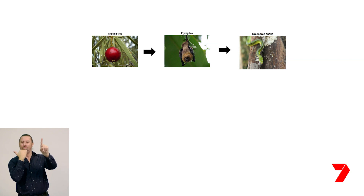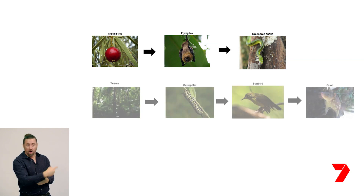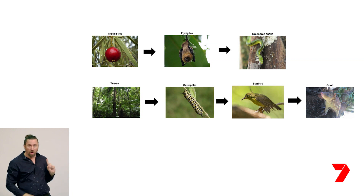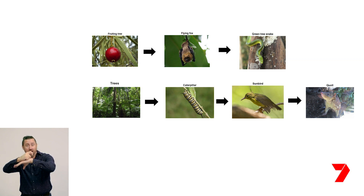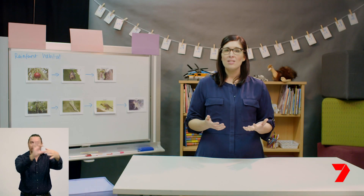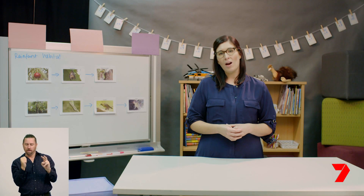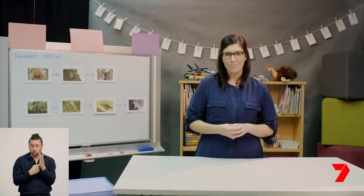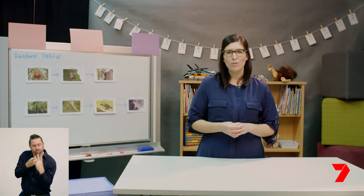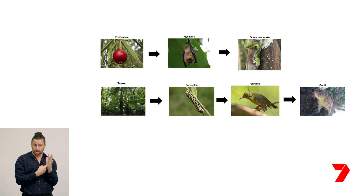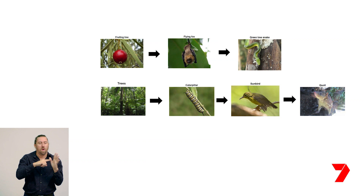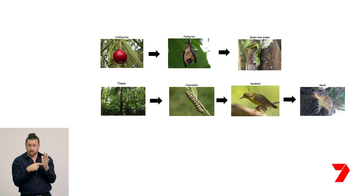So we can see two different relationships in this one chain. In the second example, quolls eat birds, and the birds eat caterpillars — caterpillars also feed on the leaves of trees. Now we can actually classify these organisms according to their role in the environment. They can be either a producer, consumer, or decomposer. Producers use non-living things from the environment such as water, air, sunlight, and nutrients to produce the food that they need to survive.